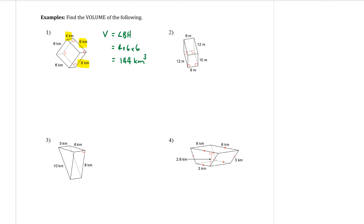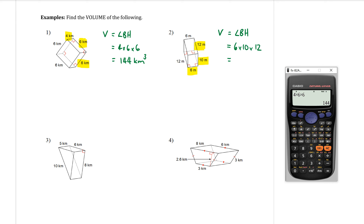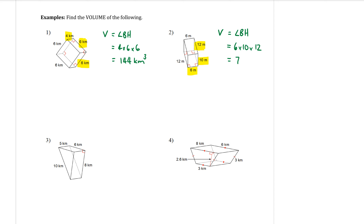Question two is also a rectangular prism, so the formula is V equals LBH. Looking at the rectangle on the bottom, it has six and ten as the side lengths, and the height going up is twelve. Substituting those three dimensions into the formula in any order: six times ten times twelve. The volume is 720 metres cubed.